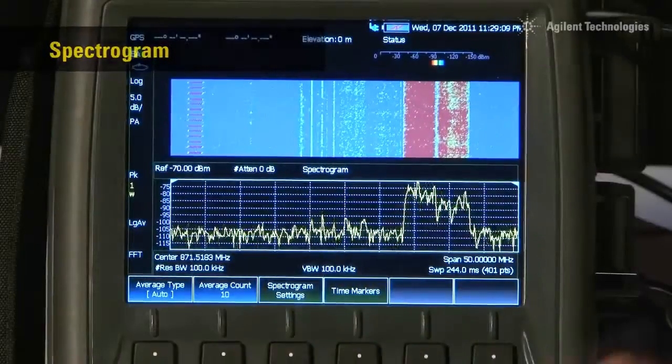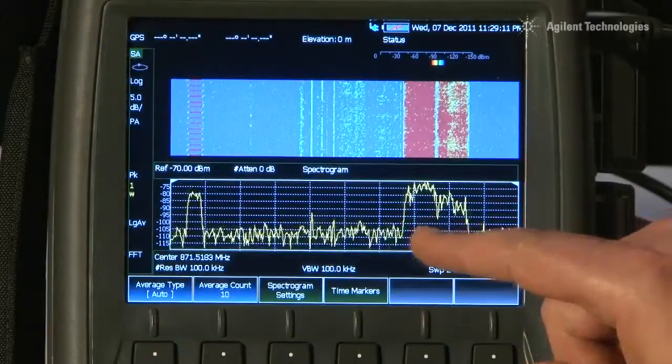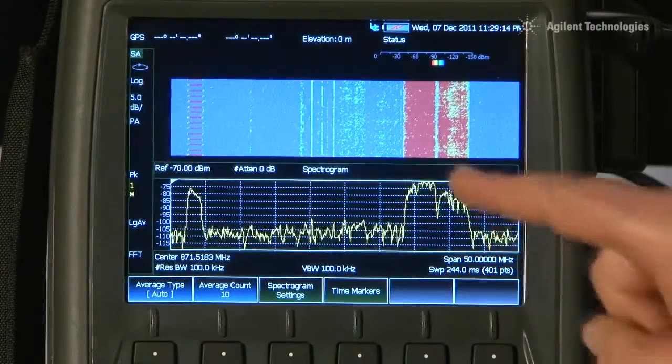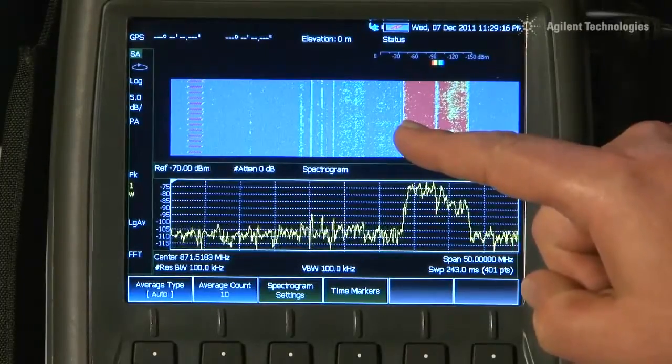The interference analyzer option greatly simplifies the task of capturing intermittent signals. The lower half of the display shows the normal spectrum analyzer trace as we have seen previously, but the upper half of the display now shows a spectrogram.